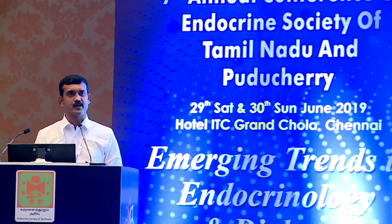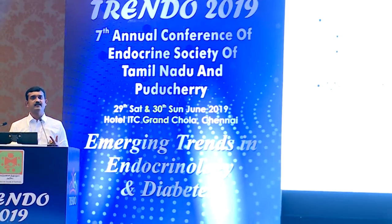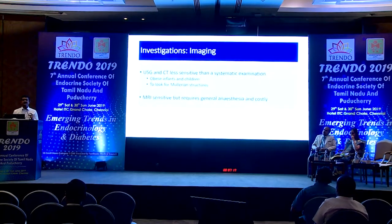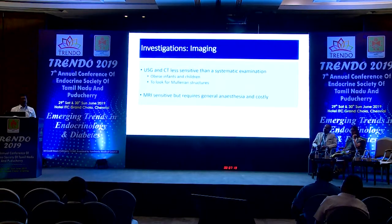The large majority of undescended testis cases are unilateral impalpable testis with no penile abnormality and no micropenis or hypospadias; these patients can be directly referred to urologists. Regarding imaging, simple examination is much more sensitive than ultrasound, which is why recent guidelines recommend against routine ultrasound in evaluation of undescended testis. However, ultrasound may be used in obese patients or in those with bilateral impalpable testis or unilateral impalpable testis with penile abnormality, to look for Müllerian structures.